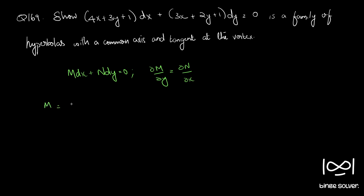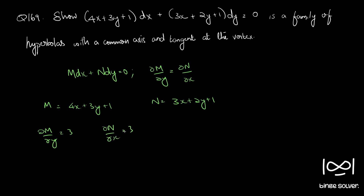Here M is 4x plus 3y plus 1, and N is 3x plus 2y plus 1. So dou M by dou y is 3 and dou N by dou x is also 3. Therefore dou M by dou y equals dou N by dou x, which implies the differential equation is exact.